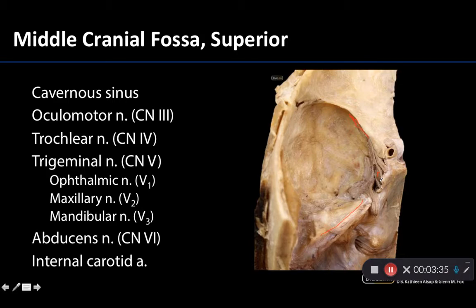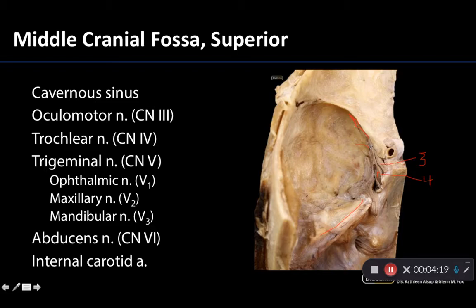There are other structures very closely associated. You have the oculomotor nerve — this right here is CN3. This is your trochlear nerve, CN4. Then we get into the trigeminal nerve, which has three divisions. This image is really nice for showing how these three divisions exit the skull. Your first division, V1, exits through the superior orbital fissure along with CN3 and CN4 — you can see them all heading up toward that region. The superior orbital fissure isn't very visible in this view because it's being occluded by the lesser wing of the sphenoid.